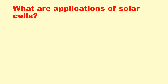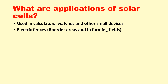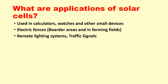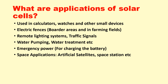What are the applications of solar cells? They are used in calculators, watches, and other small devices; in electric fences in border areas and remote farming fields; for remote lighting systems; in traffic signals and traffic cameras; in water pumping and water treatment; for emergency power and battery charging; in space applications such as artificial satellites and space stations; and in portable power supplies. There are also solar-powered cars which use solar power.